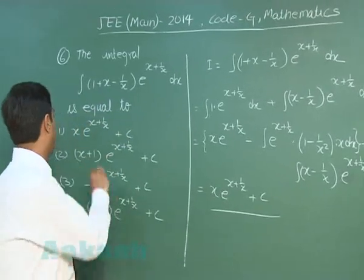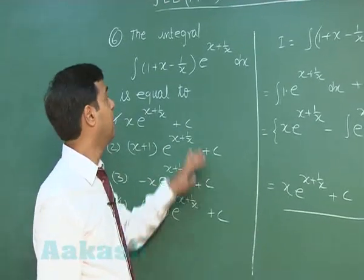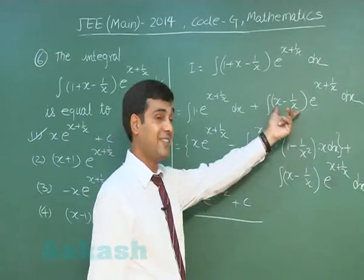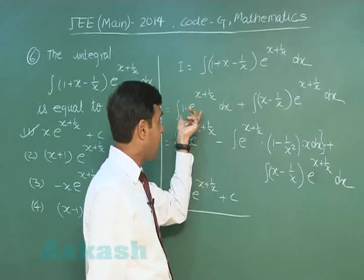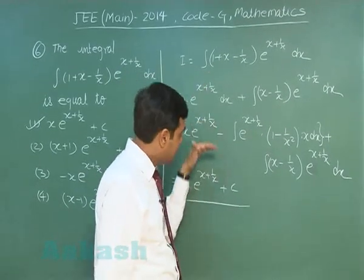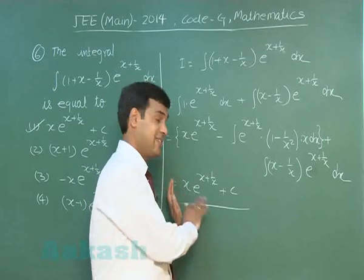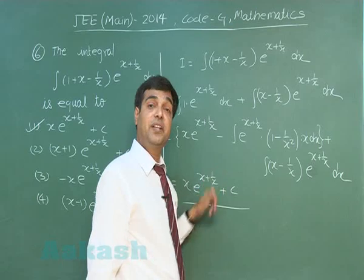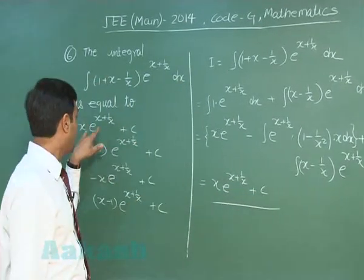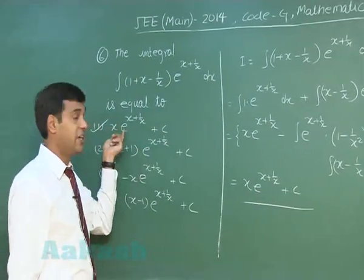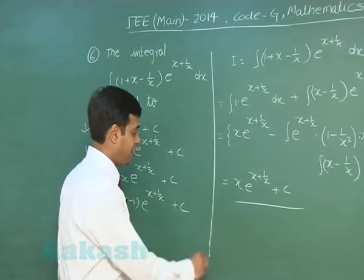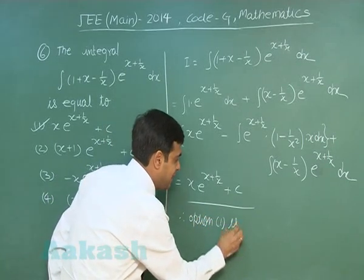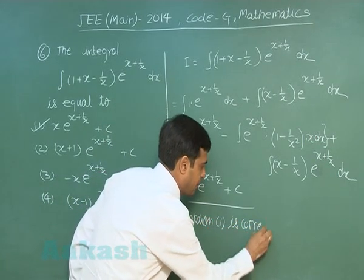So option 1 is correct. To summarize: I split the given integral into two terms, applied by-parts on the first one, and the resulting term cancelled with the second integral. Alternatively, applying by-parts on the second integral gives the same result. We can also verify by differentiating option 1, which returns the original integrand. Therefore option 1 is correct.